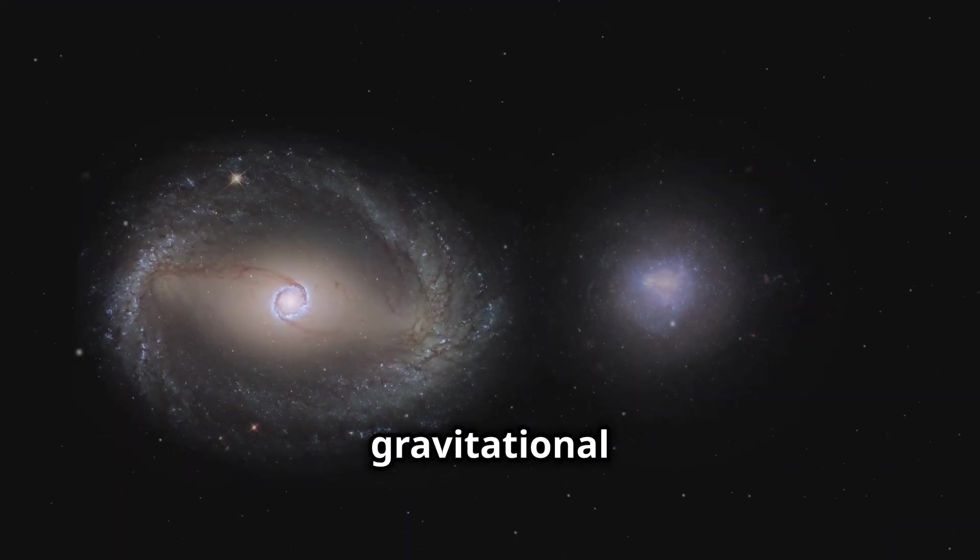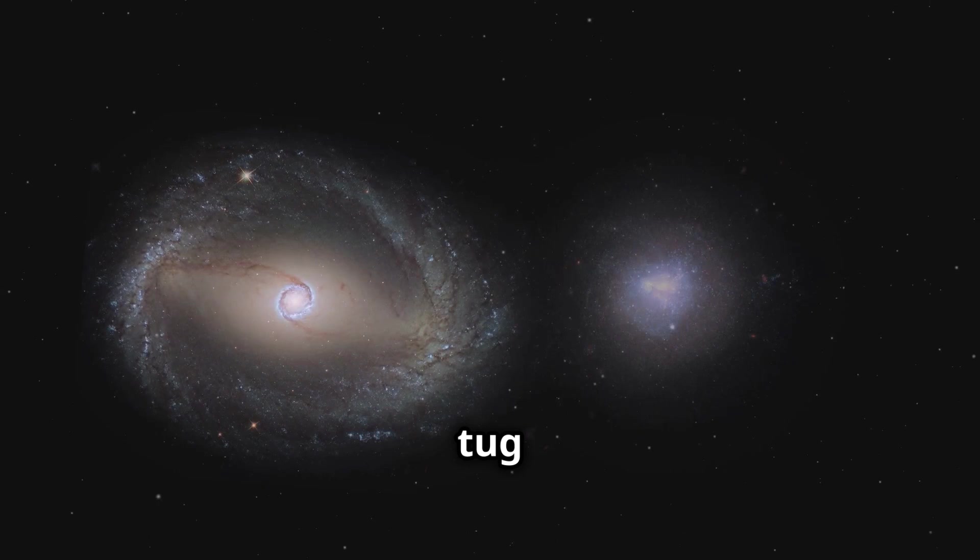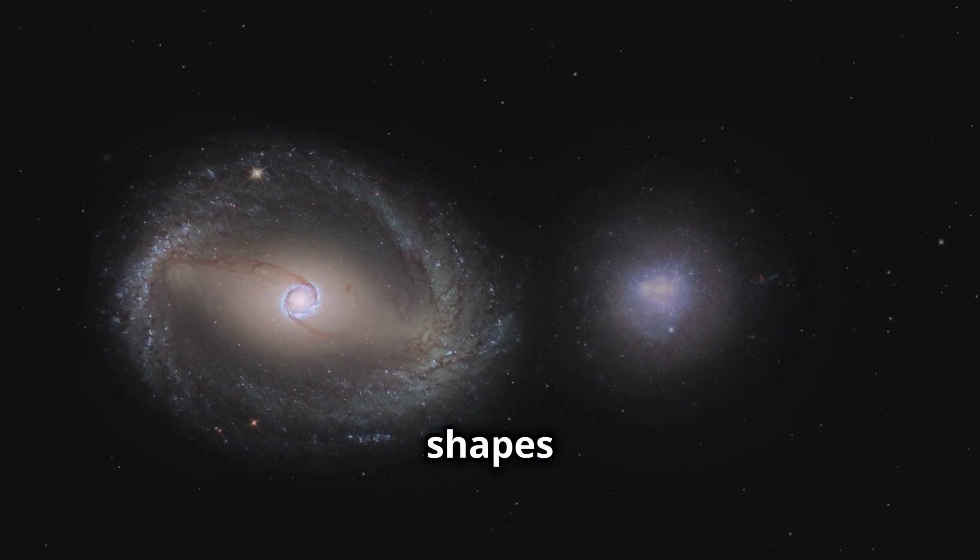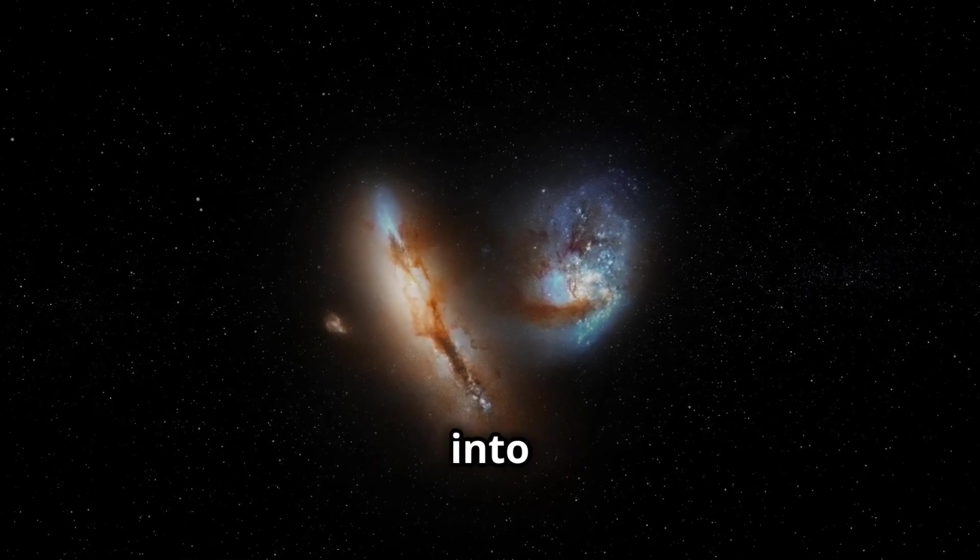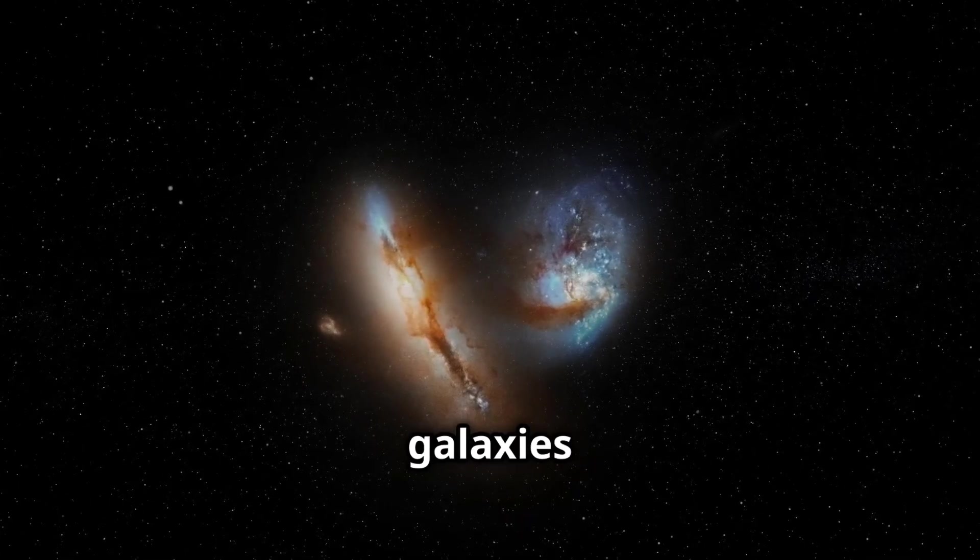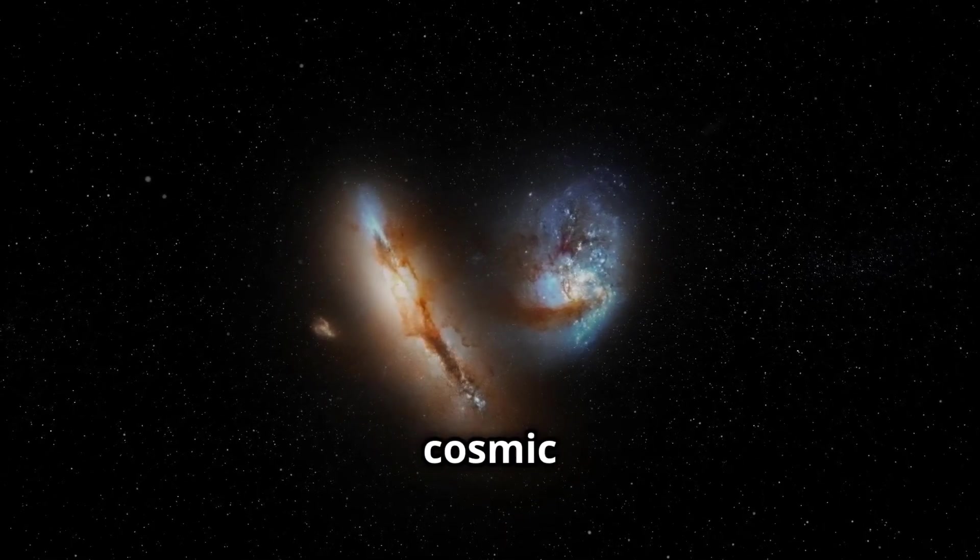Due to their immense gravitational pull, galaxies can tug on each other, distorting their shapes and sending ripples through their structures. These gravitational interactions can escalate into full-blown collisions, where galaxies merge and reshape their cosmic destinies.